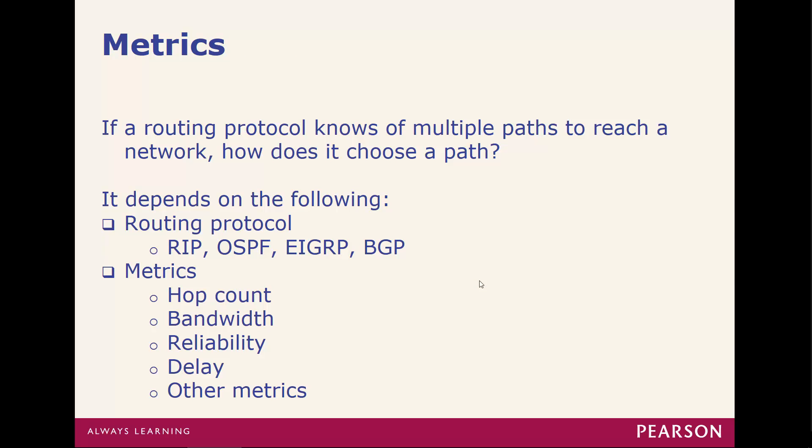Metrics — how do we figure out which is the best route? This depends on the routing protocol and the metric it uses. For example, some metrics could be hop count, bandwidth, reliability, latency or delay, or a combination of metrics. For example, OSPF may take into account hop count and bandwidth.